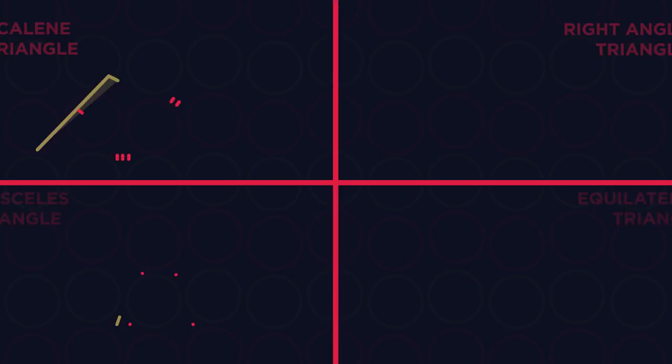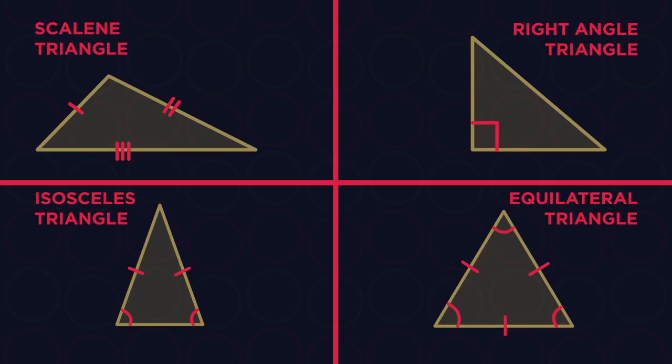The only tricky part to this is remembering the different names. Equilateral is easy. It sounds like equal. All sides and angles are equal.